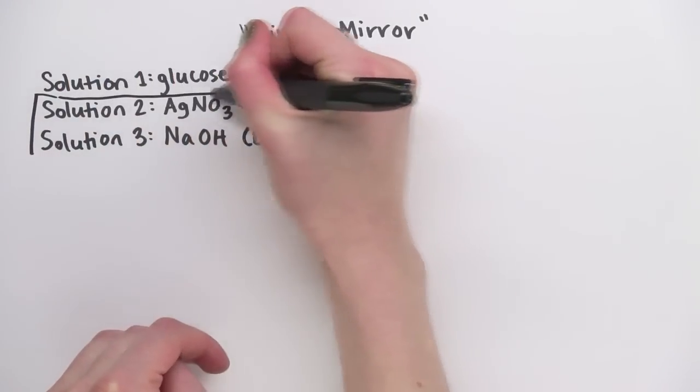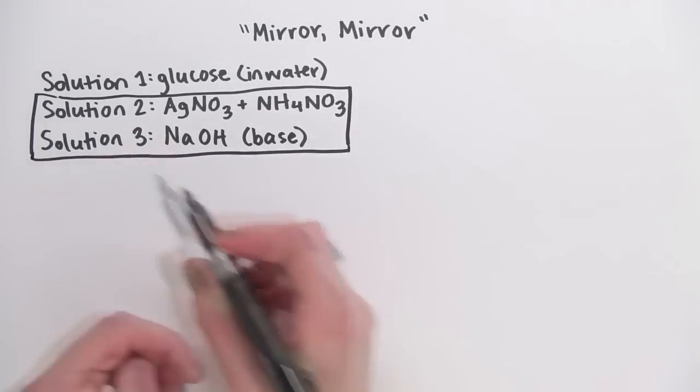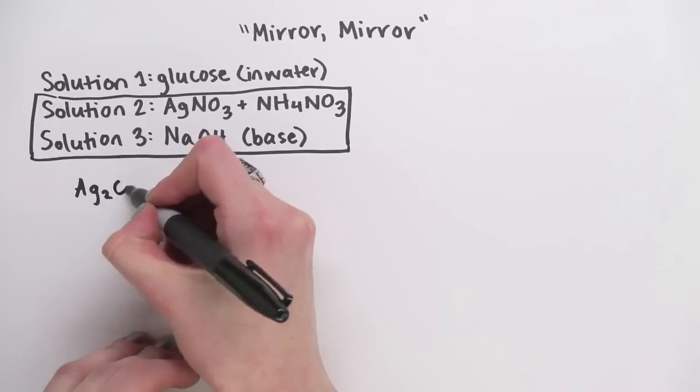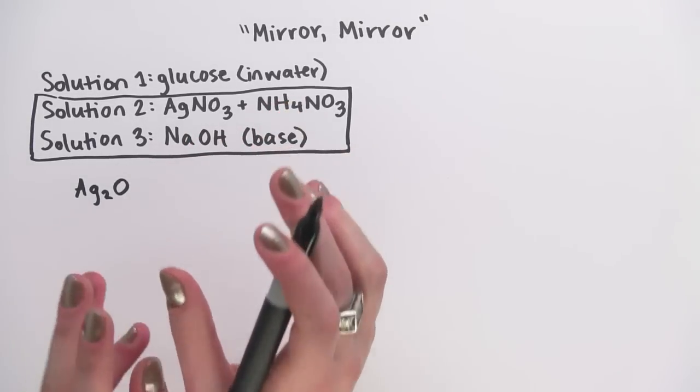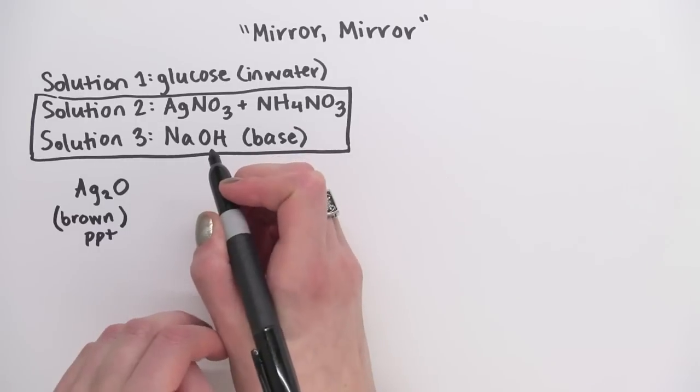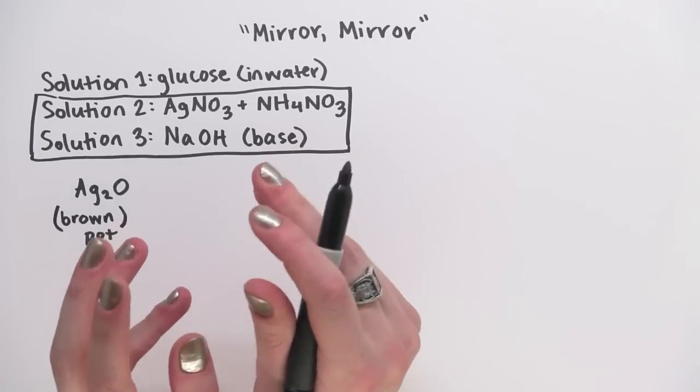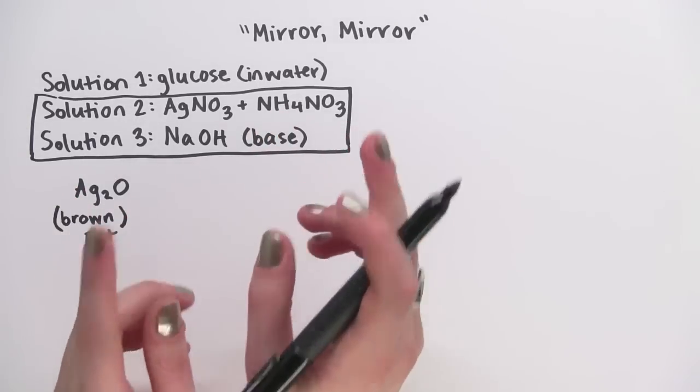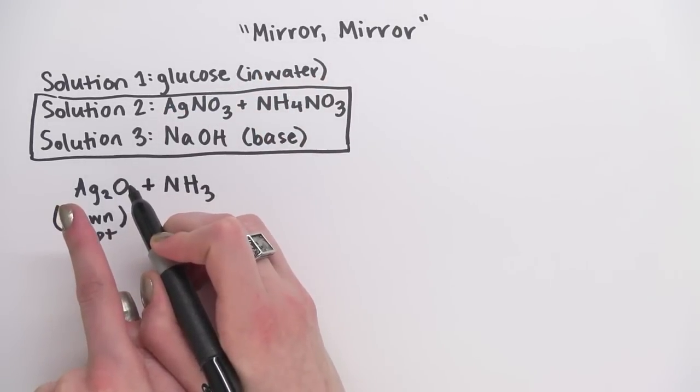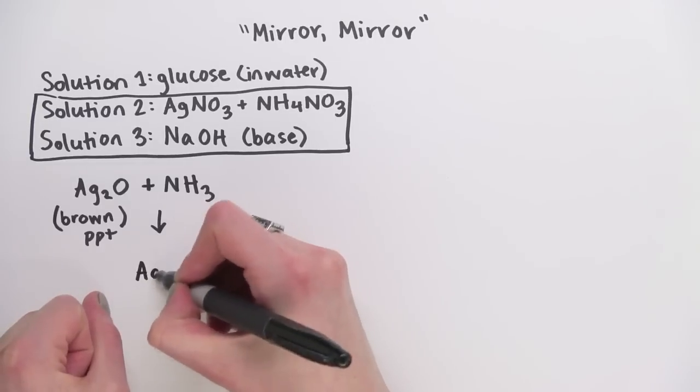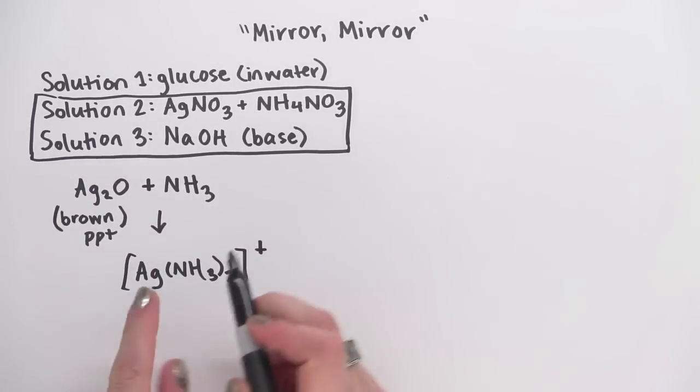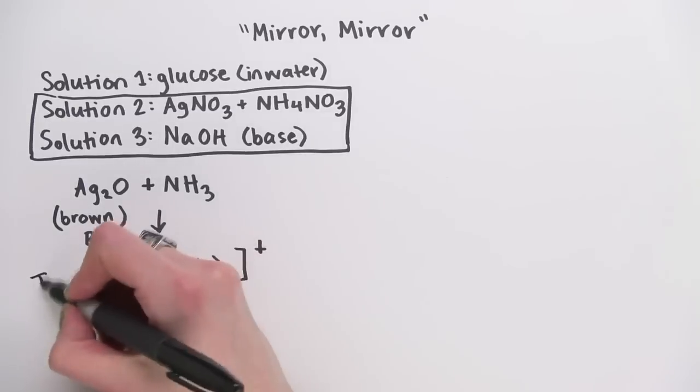So let's focus on the second two solutions first. When you mix solutions two and three, two things happen. First, you form Ag2O, which is insoluble in water, so it precipitates out as a brown solid. The sodium hydroxide reacts with ammonium, NH4+, to produce ammonia, NH3. This dissolves the precipitate, and you end up with Ag(NH3)2+, which all has a positive charge. This is soluble in water, and it's called Tollens reagent.